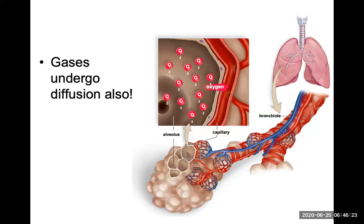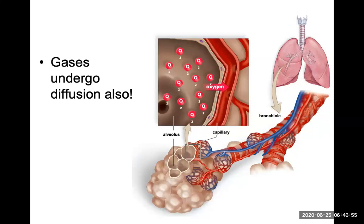Gases undergo diffusion as well — oxygen and carbon dioxide. A great example is what happens in your lungs. We have little sacks of air called alveoli, and capillaries surround those sacks. Oxygen will diffuse from the air you breathe in the alveolus directly into these blood capillaries, going from an area of highly concentrated oxygen inside the alveolus to low oxygen concentration in the blood capillaries. The capillaries take oxygenated blood back to the heart, which pumps it out to the body.